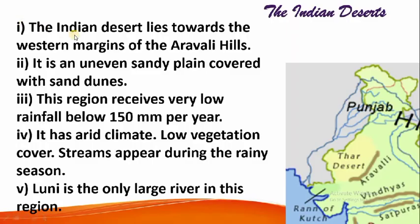The Indian Desert lies towards the western margin of the Aravali Hills. You can see here on the map, these are the Aravali Ranges. To the west of the Aravali Range, there is the Thar Desert.